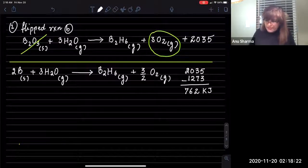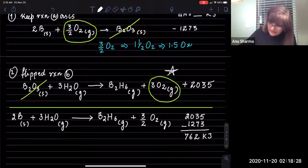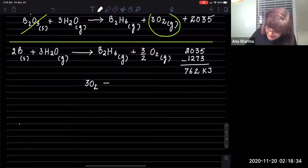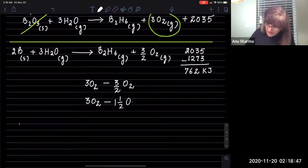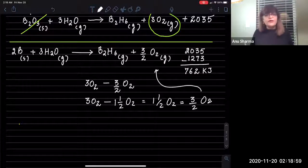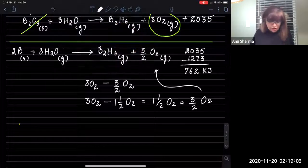Let's look at how we got 3/2 O₂. We know that from one reaction we have 3 O₂, and from the other we have 3/2 O₂. So: 3 O₂ minus 3/2 O₂ means 3 O₂ subtracting 1.5 O₂, which leaves 1.5 O₂. And the other way of writing 1.5 O₂ is 3/2 O₂, which is what you see in the intermediate result.